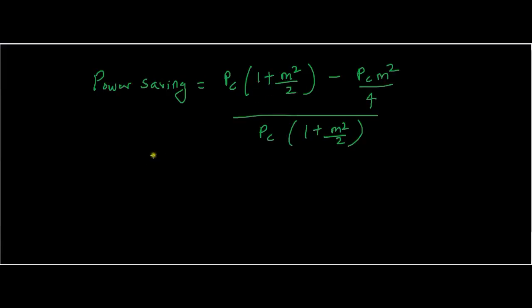If we simplify this equation, it will be PC + PC·m²/2 - PC·m²/4, upon PC + PC·m²/2.